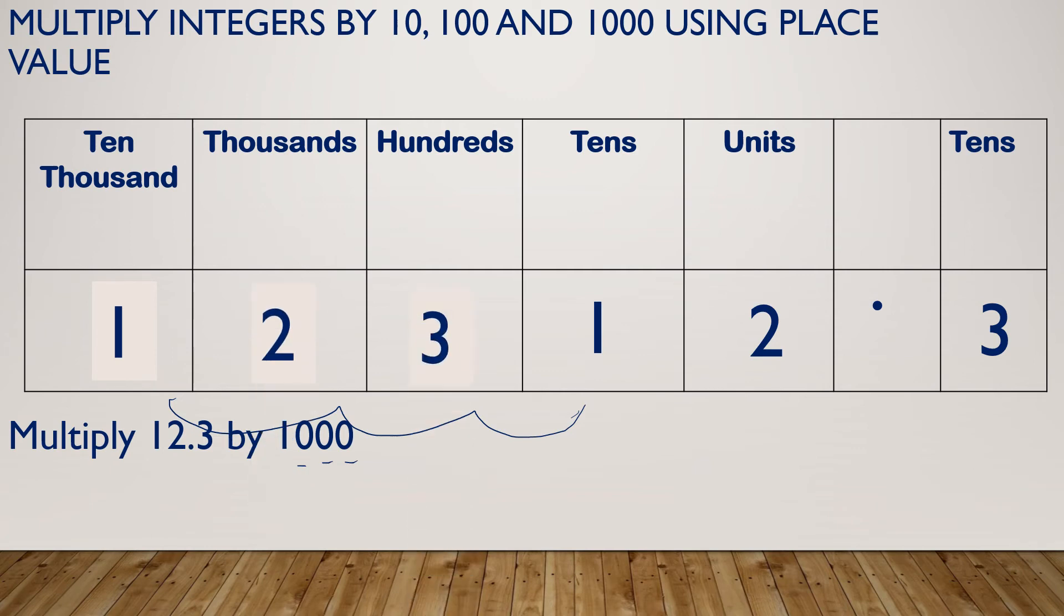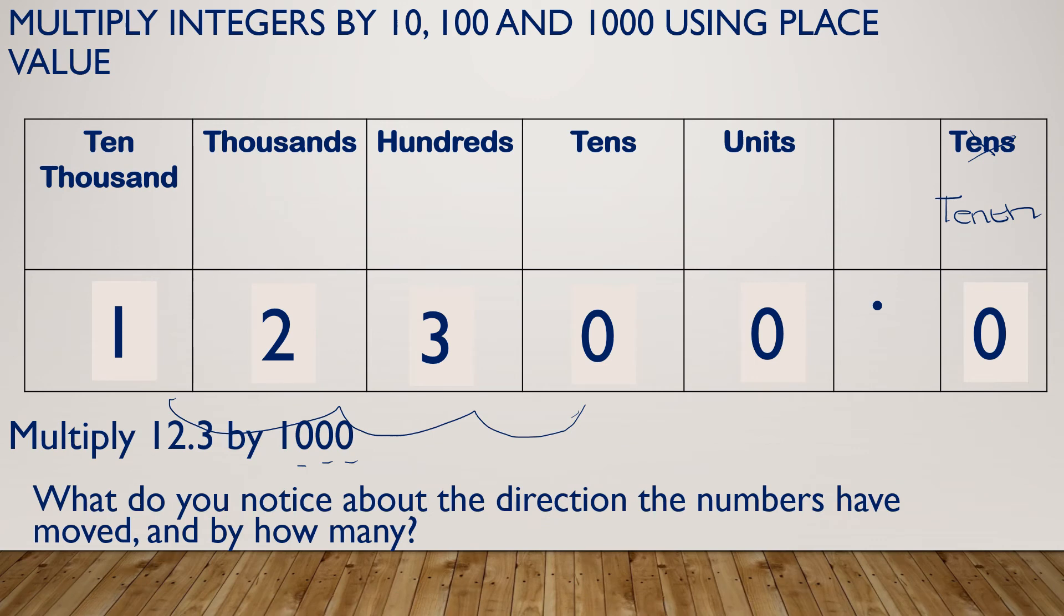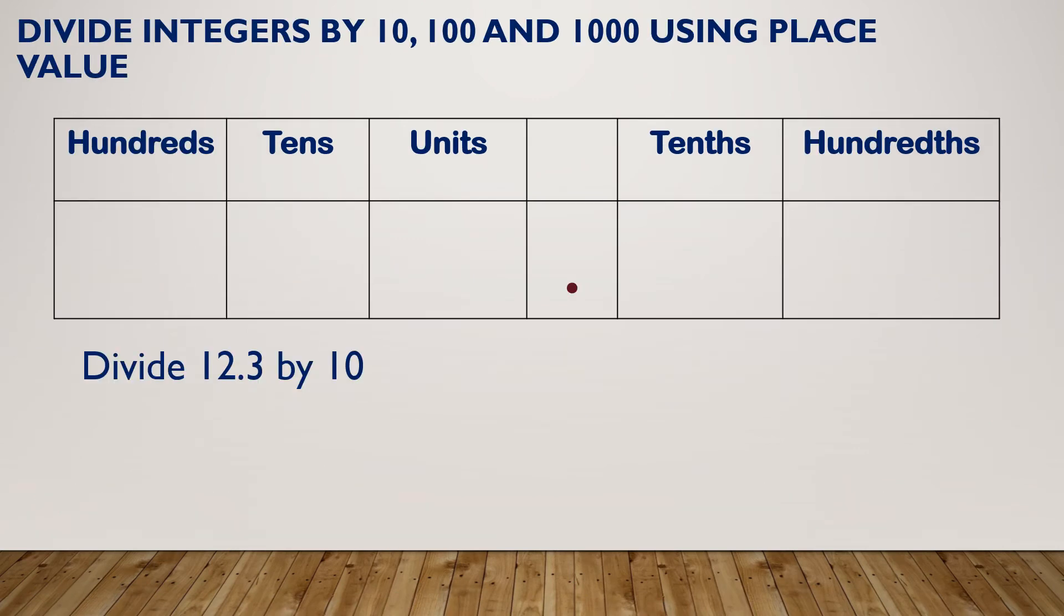So let's have a look at dividing. Now dividing exactly the same but the other way around. So if I was doing 12.3 divided by 10, whereas before, I'm moving things one space because I've got 1 zero. Whereas when I was multiplying, my digits moved one space to the left. When I'm dividing, my digits move one space to the right. So my 10 now becomes a unit. My unit now becomes a tenth and my tenth now becomes a hundredth. So everything moves one space to the right.